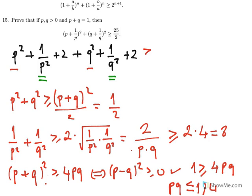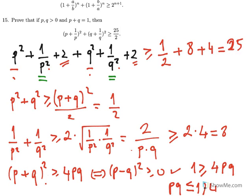So we have p² + q² ≥ 1/2, and 1/p² + 1/q² ≥ 8. Adding everything together with the cross terms 2 + 2 = 4, the total adds up to 25/2, as desired.